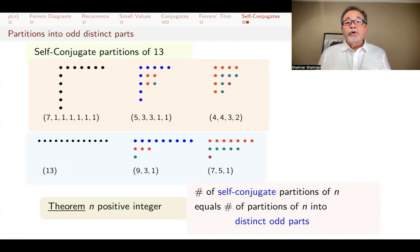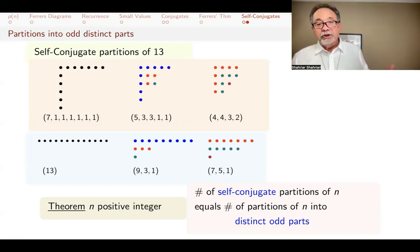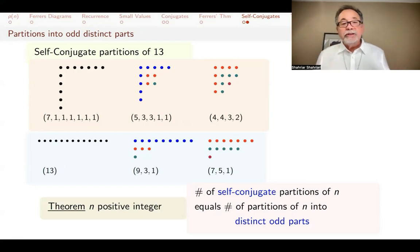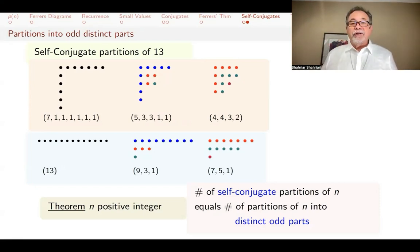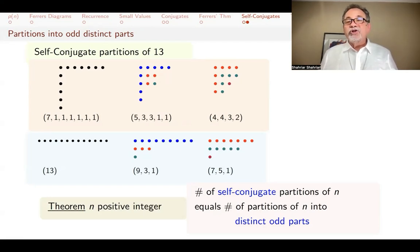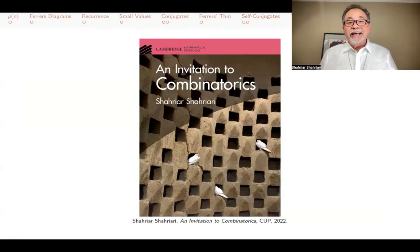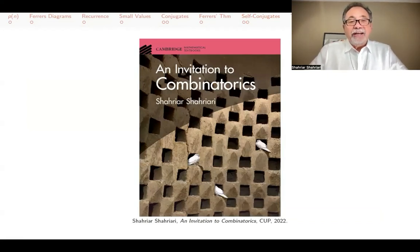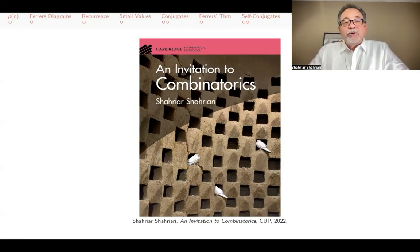Distinct means no two parts are the same; odd means each part has an odd number of elements. We could write this down more formally, as I've done in my book, but the picture is really worth a thousand words — the picture shows you the bijection, the one-to-one correspondence. If you want to work with partitions, you can use recurrence relations, Ferrer's diagrams, or most powerfully, generating functions, which we'll get to in the generating function videos. This is the end of this lecture. Like the video and subscribe to the channel if you want more math videos, and keep hydrated at all times.